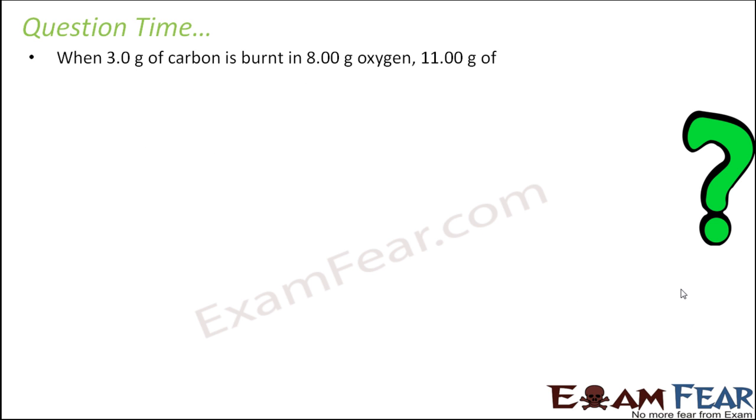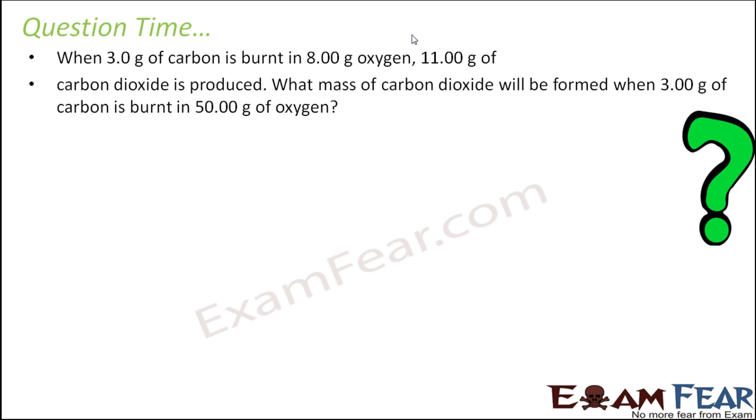Next question is: when 3 grams of carbon is burned in 8 grams of oxygen, 11 grams of carbon dioxide is produced. What is the mass of carbon dioxide formed when 3 grams of carbon is burned in 50 grams of oxygen? Carbon is burned in oxygen to form carbon dioxide. At T equals 0, this was 3 grams, this is 8 grams, and this was 0 grams. At T equals T, some 11 grams of carbon dioxide is produced. Law of conservation of mass. That means all these grams are used. This becomes 0 and this becomes 8 plus 3, which is 11. So 11 and this is 11. Perfectly fine.